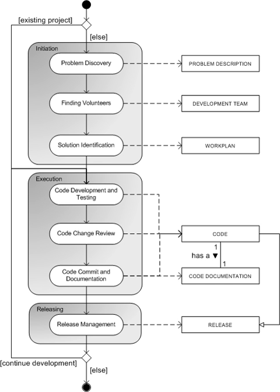Also, in closed-source projects, the development teams must often work under management-related constraints such as deadlines, budgets, etc., that interfere with technical issues of the software. In open-source software development, these issues are solved by integrating the users of the software in the development process, or even letting these users build the system themselves.